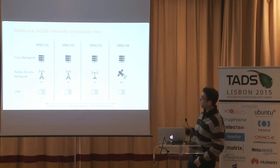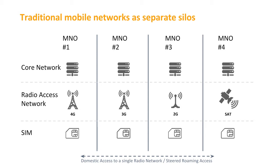Looking at the traditional model, in a country you have multiple mobile network operators, and you can see three layers inside those operators. First is the SIM card — you put it into your device so it can authenticate and attach to the network. Then you have the radio access network depending on the radio technology: 2G, 3G, 4G — and probably there will be an 8M2M standard in the future with low-power features. And then you have the core network managing SIM cards and handling data breakout.